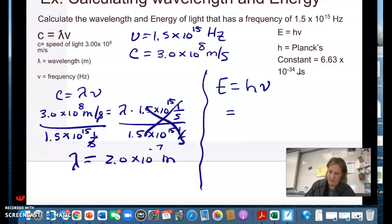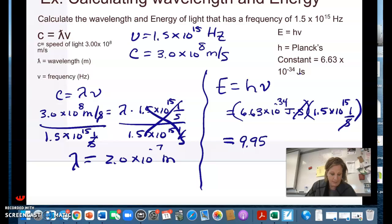So if I plug in Planck's constant and it's joule times second and I multiply that by the frequency in this question. I'm going to write it as 1 over second to show you that the seconds cancel. You end up with that energy unit of joule. So when I do this, I will get 9.95 times 10 to the negative 19th joule.